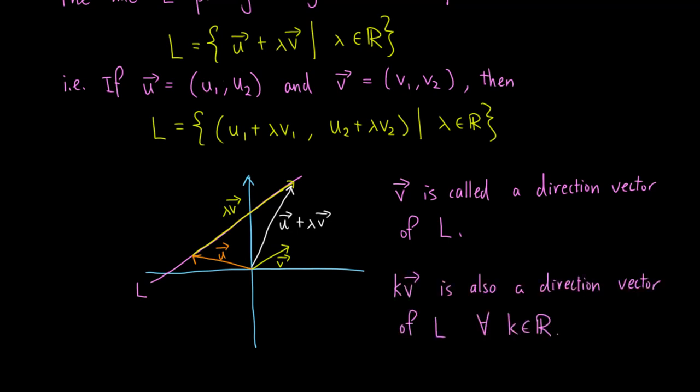Note that if v is a direction vector, then kv is also a direction vector for all real numbers k, because scalar multiplication does not change the direction of v.